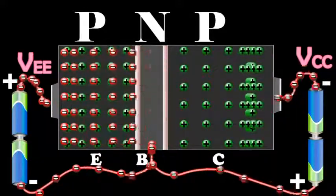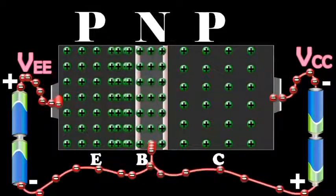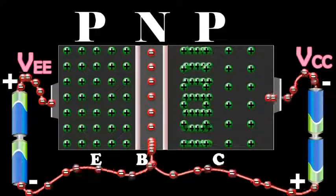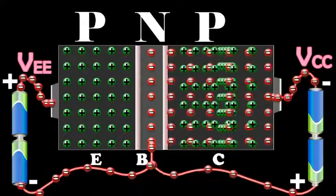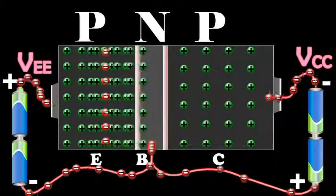The loss of total number of electrons per second is made up by the flow of an equal number of electrons from the negative terminal of VEE into the base. The flow of these electrons contributes to the base current IB.